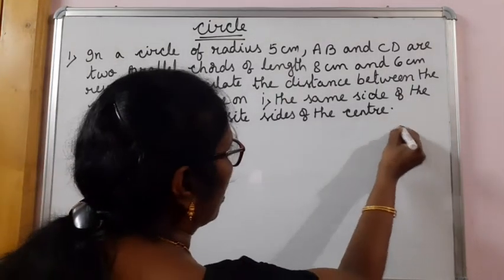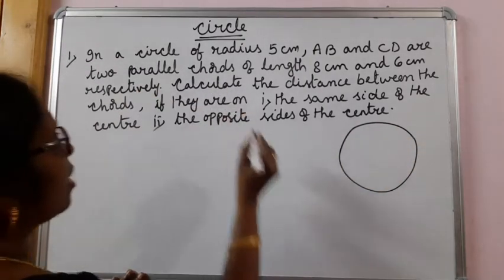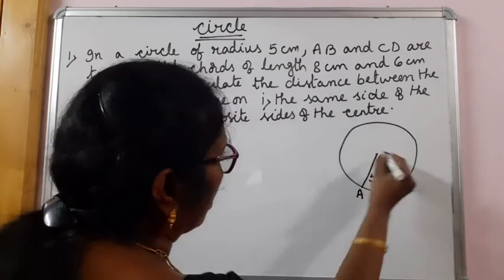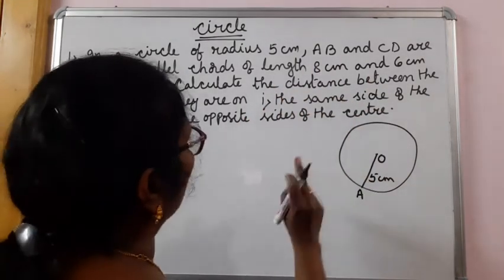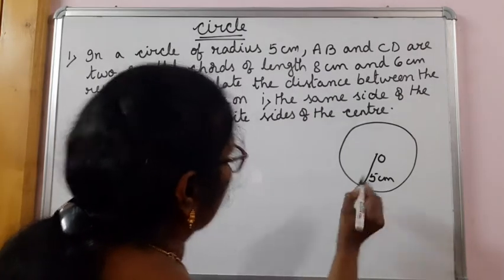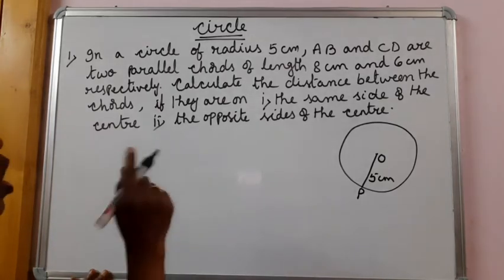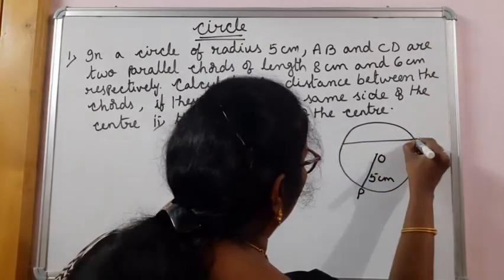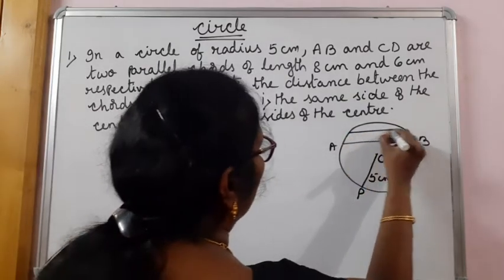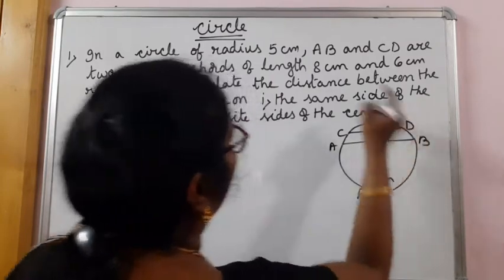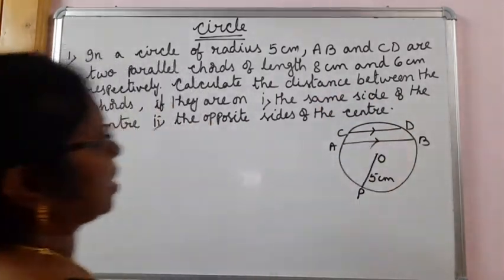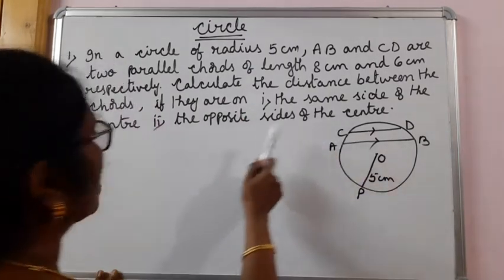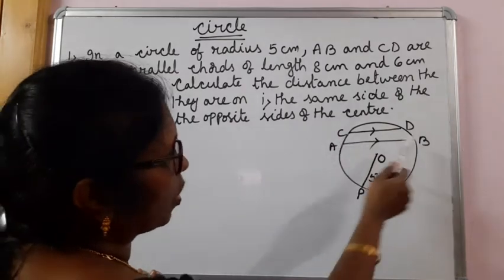Let me explain with the figure. Suppose this is a circle of radius 5 cm. Let me name the center as O, so OA is 5 cm. AB and CD are two parallel chords. I have drawn both the chords on the same side of the center.